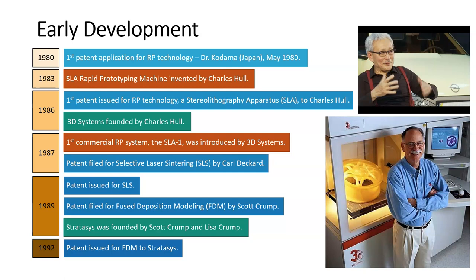A year later in 1987, we have the first commercial rapid prototyping system, the SLA-1, produced by 3D Systems. You can see Charles Hull standing in front of that first machine — it's a resin 3D printer using a VAT photopolymerization process. Up here you can also see a picture of Dr. Kodama, the Japanese researcher who first patented the rapid prototyping technology.